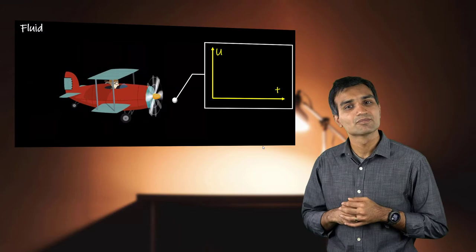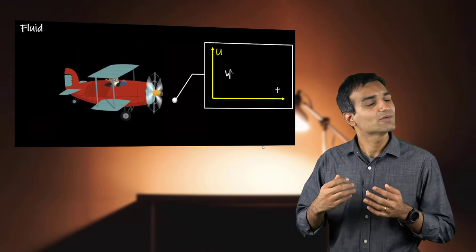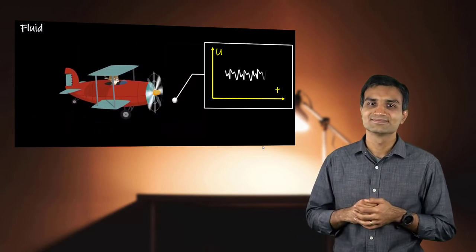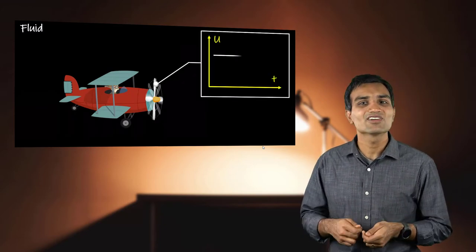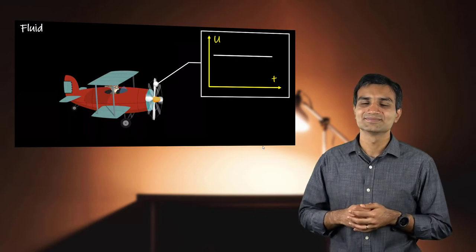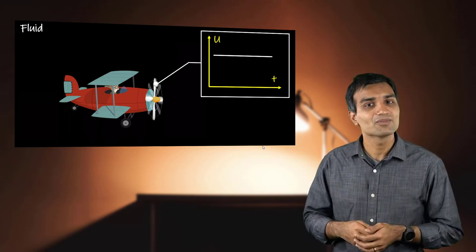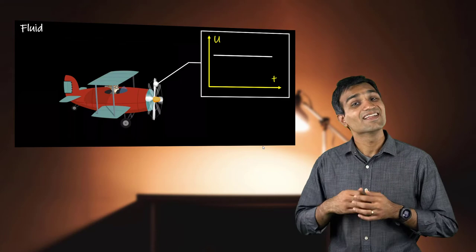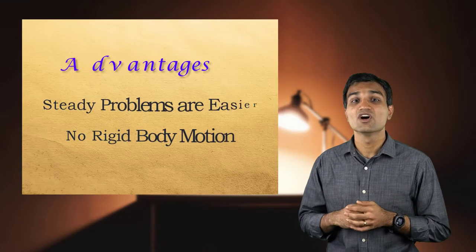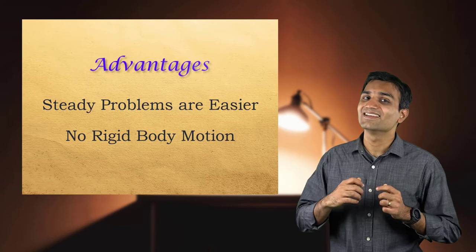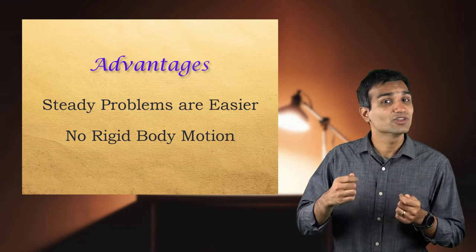For example, if the fluid velocity were measured at a point near the propeller of a plane, we would obtain an unsteady velocity profile. But when the same measurement point is now on the propeller blade, the fluid velocity becomes steady. Because steady problems are easier to solve, and this approach does not require any rigid body motion of parts, it is less tedious compared to the previous approach.